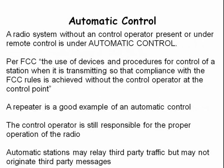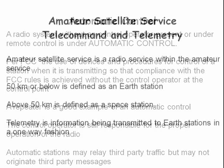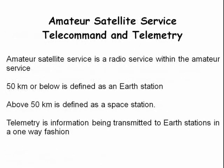The FCC uses the term automatic control to refer to a radio station with no control operator present or under remote control. A repeater is a good example of automatic control; the control operator is still responsible for that station. An amateur satellite operating below an altitude of 50 kilometers is defined as an earth station; above 50 kilometers the satellite is defined as a space station. Telemetry is defined as one-way information sent to earth stations.